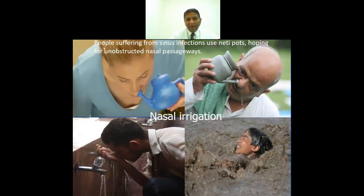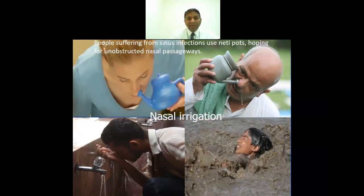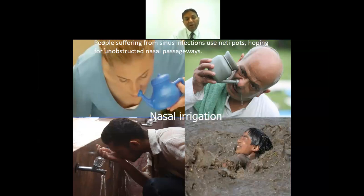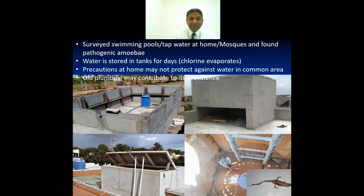Ablution is one route, but there are other mechanisms as well. Some people contract the parasite by swimming in contaminated water. Nasal cleansing with neti pots to unobstruct nasal passages is another route. Different mechanisms that involve using water to cleanse or clear the nasal passage may allow this parasite to enter the nostrils, slowly migrate to the brain, and lead to the death of the patient.